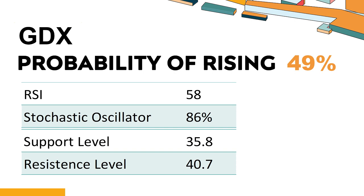What technical signals should you watch for when analyzing GDX? The 14-day Relative Strength Index (RSI) value of GDX was 58. When the RSI is between 50 and 70, it generally indicates that the stock is moderately bullish. This means that the security's price has been rising but has not yet reached overbought levels, which are usually considered an RSI reading of 75 or higher.